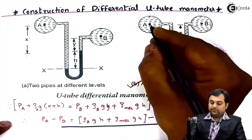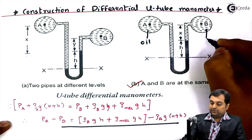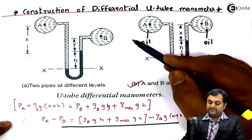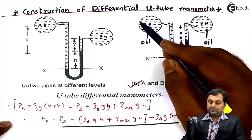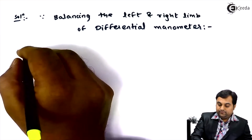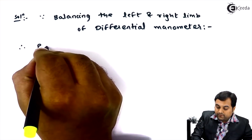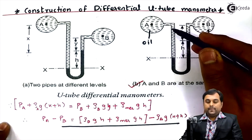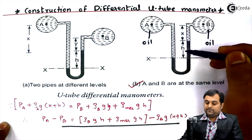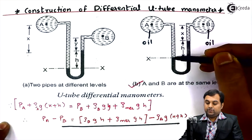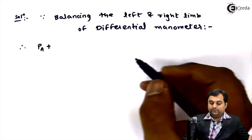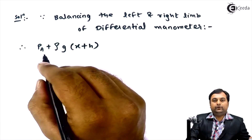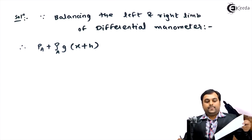In the left portion there is oil, and in the right portion there is also oil, because both pipelines contain the same fluid. Balancing the left part: we take the pressure at point A, plus the pressure exerted by the oil in the left limb. The total height of oil in the left limb is x plus h, so this gives Pa plus ρ_a · g · (x + h).